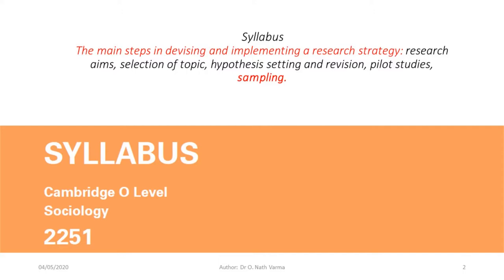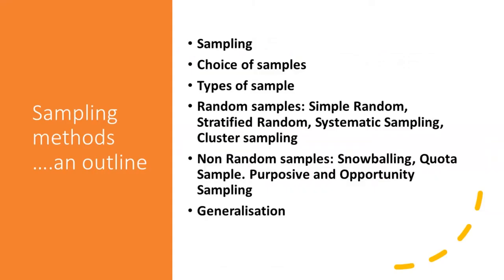We'll have three lessons where we will concentrate on sampling. We should look at different aspects of sampling. We'll start by looking at the main concepts in sampling, the choice of samples, type of sample, random samples which consist of simple random, stratified random, systematic sampling, cluster sampling, non-random samples which would consist of snowballing, quota sampling, purposive and opportunity sampling. We'll also look at the issue of generalization from the point of view of the positivist and the anti-positivist.